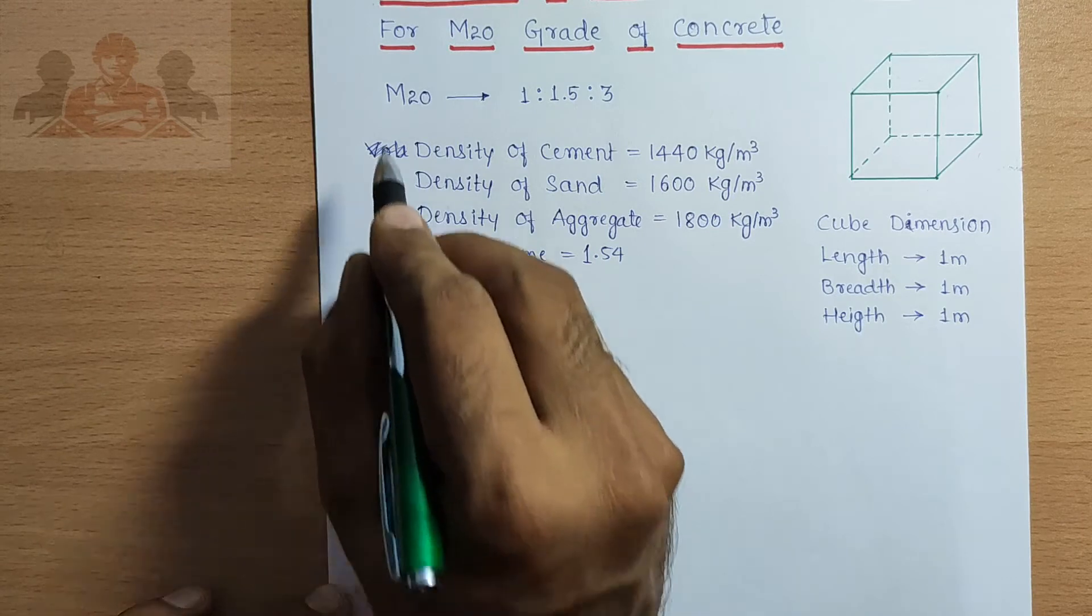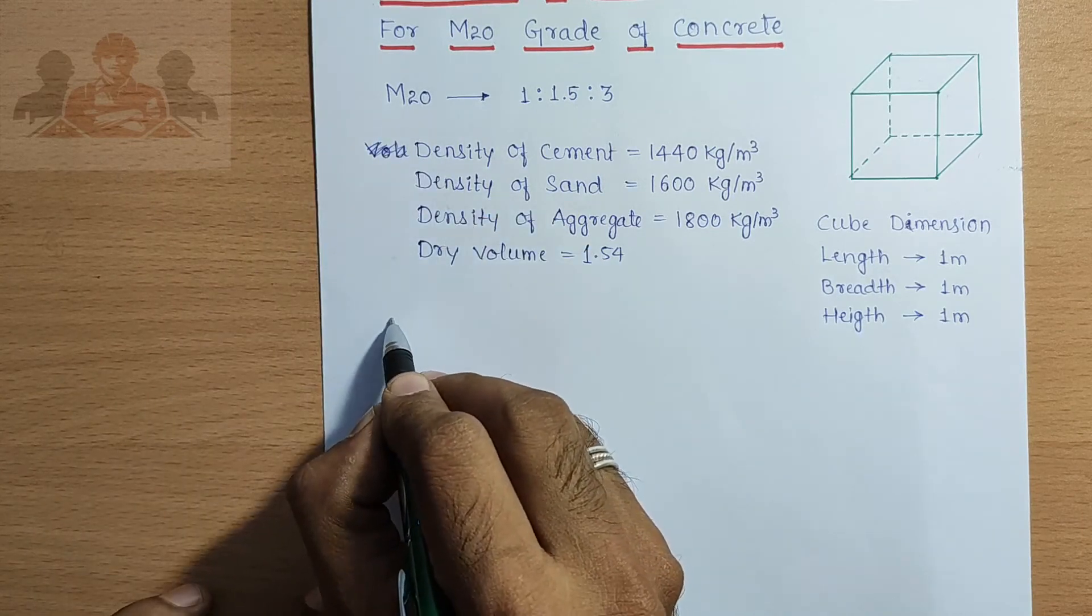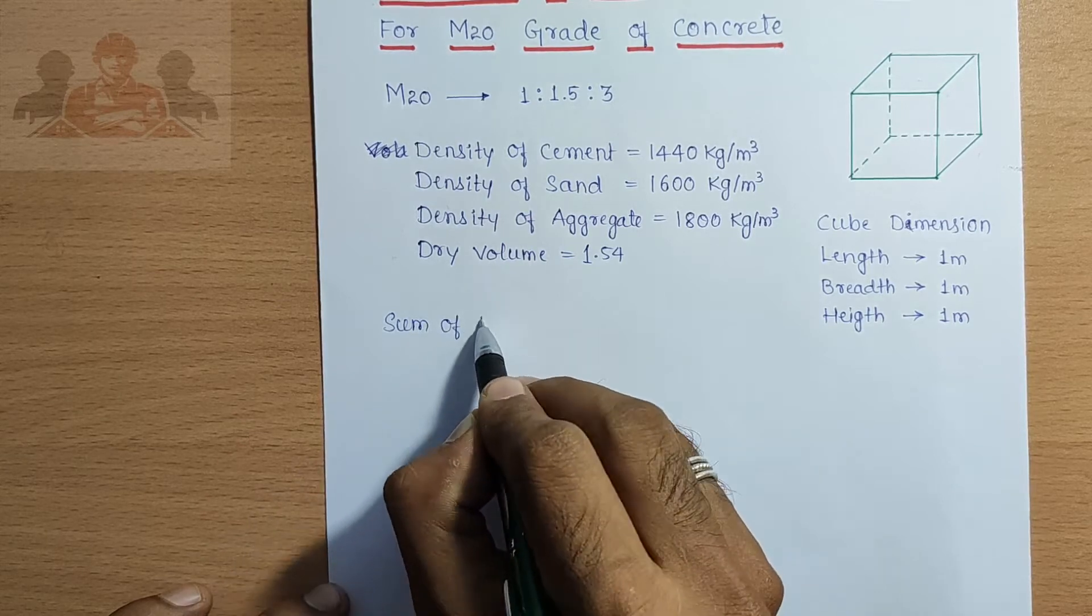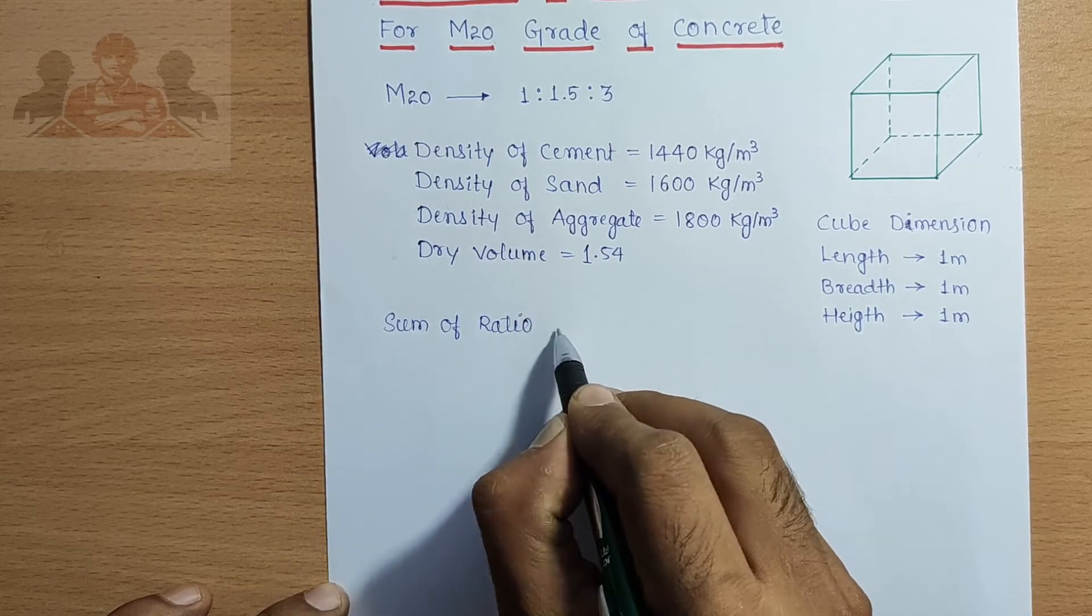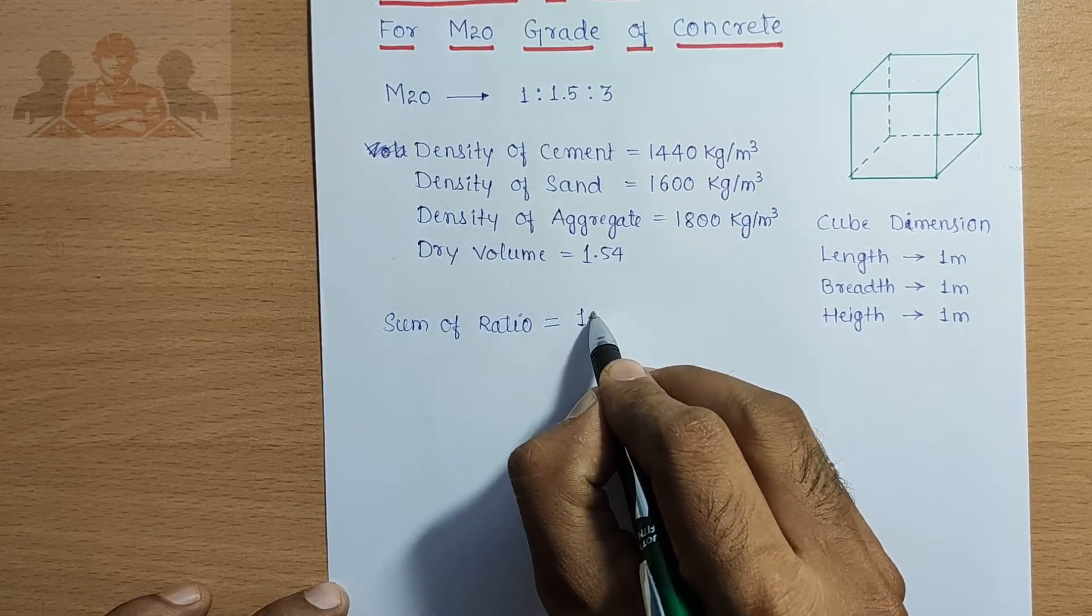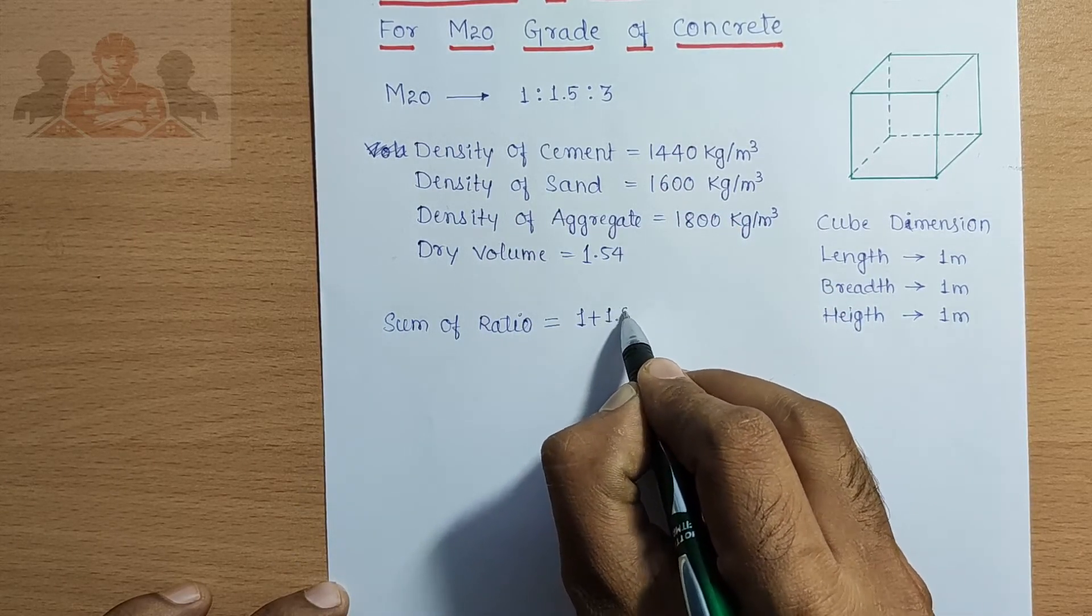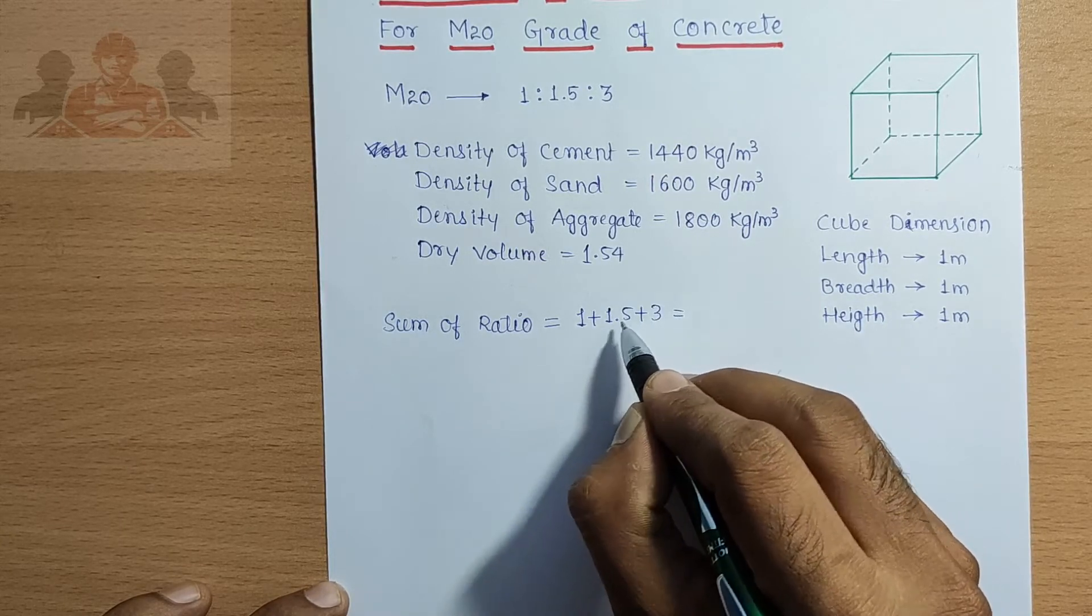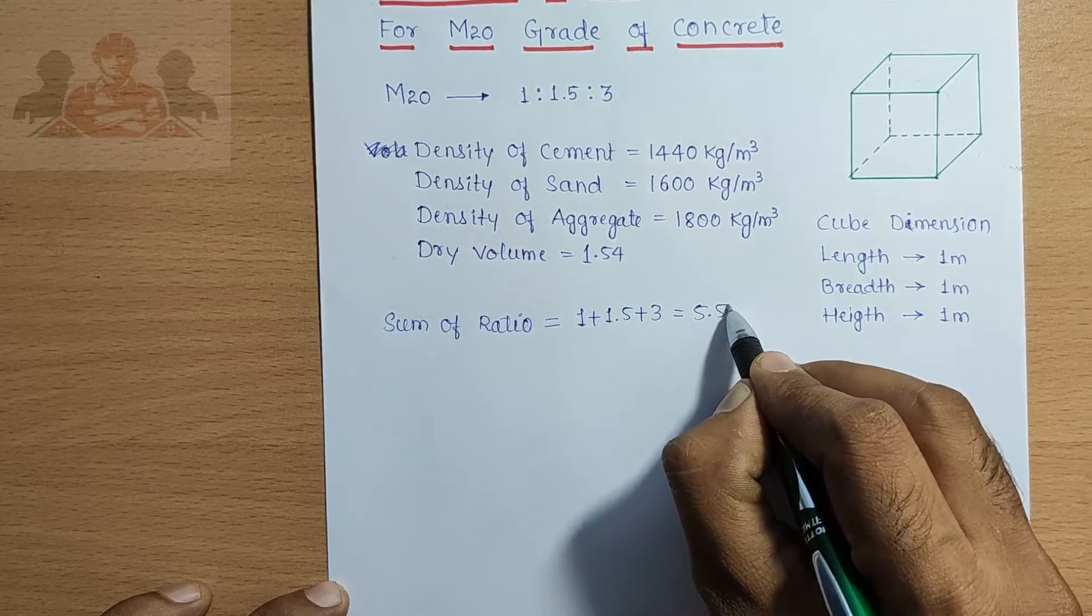Sum of ratio: 1 plus 1.5 plus 3 equals 5.5.